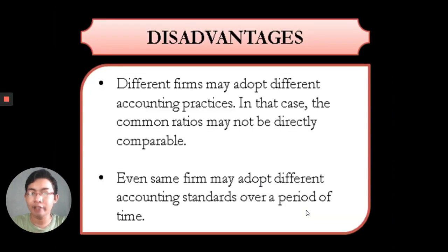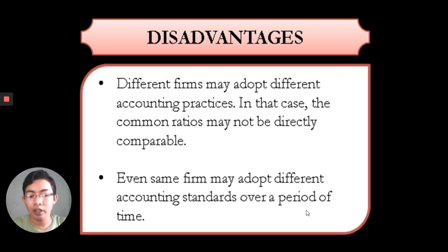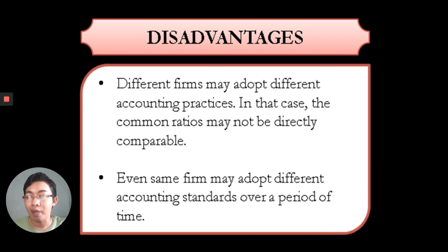What are the disadvantages of using horizontal and vertical analysis? First, different firms may adopt different accounting practices, so common ratios may not be directly comparable — for example, if a company uses a specific inventory accounting policy different from its competitors. Second, even the same firm may adopt different accounting standards over a period of time. For example, using weighted average this year and FIFO next year makes comparison difficult because different accounting policies are applied.